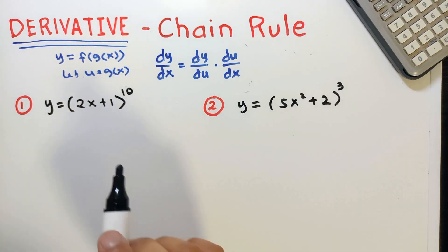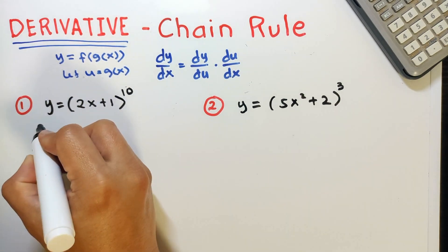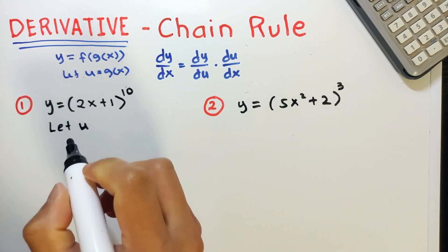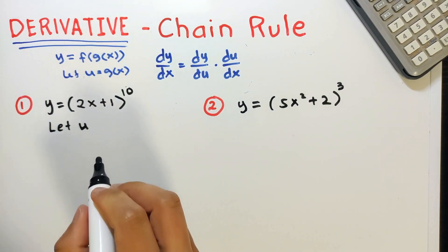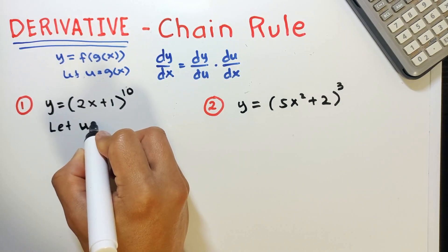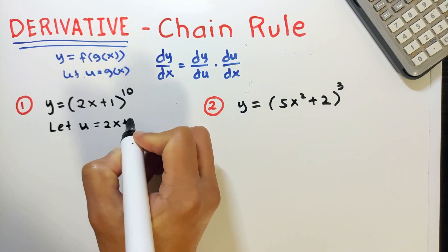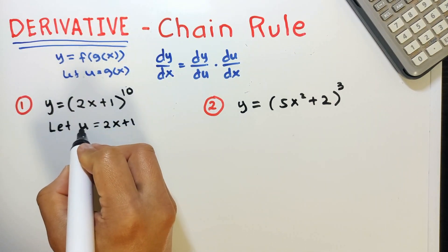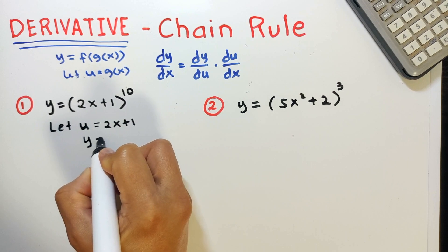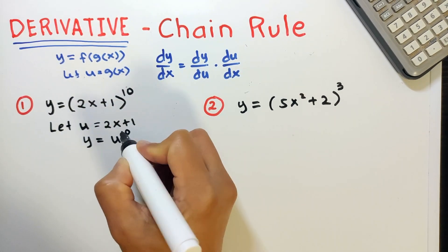Example number one: we have y is equal to 2x plus 1 raised to 10. The first step is to let u be equal to the inner function. The inner function here is 2x plus 1. If 2x plus 1 is equal to u, then we can write the original function y as u raised to 10.